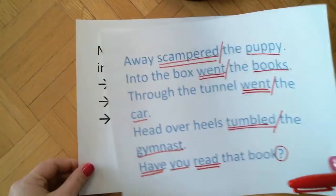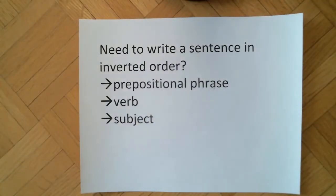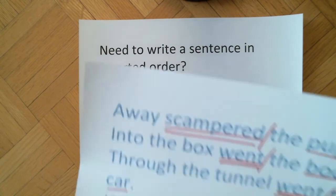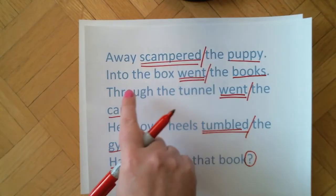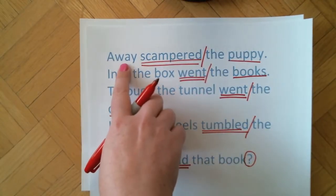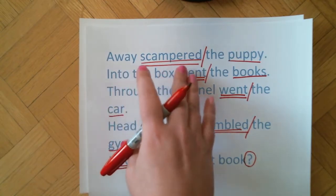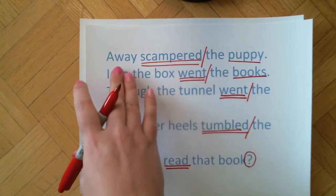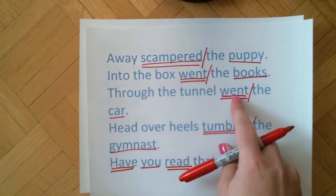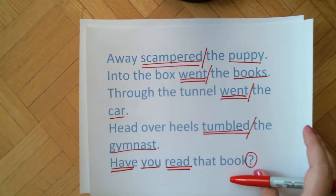What do you do if you need to make your own inverted order sentences? Three things make it easy: start with a prepositional phrase or sometimes just an adverb, then add a verb and a subject to complete the sentence. For example, 'into the box' and 'through the tunnel' are prepositional phrases, and 'away' is an adverb. Start with one of those, then add your verb, and then your subject after it.